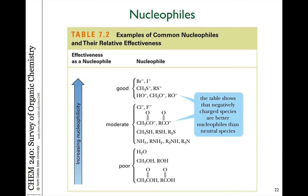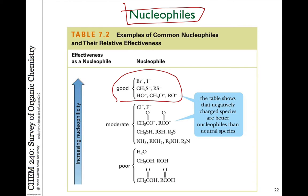In an SN2 reaction, the nucleophile is involved in the rate-determining step because it's a one-step reaction. Thus, the strength of the nucleophile matters a lot. Very good nucleophiles are negatively charged species — charged species are more reactive. Things like bromide, iodide, sulfides, alkoxides, and cyanide (CN-) are all very good nucleophiles.